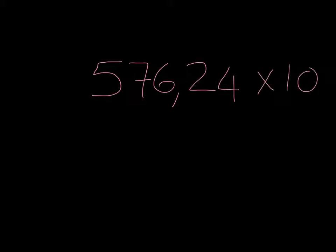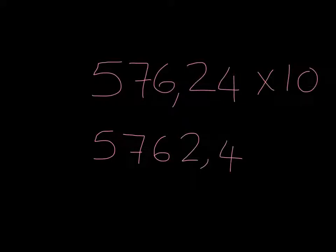Let's do two examples just to make sure we can use this trick efficiently. Let's say we've got 576 comma 2,4 and we want to multiply it by 10. Basically, we've seen that all our place values need to increase by 1. And the easiest way to do that is simply to take our decimal comma and move it over one step to the right. And that will give us 5762 comma 4.